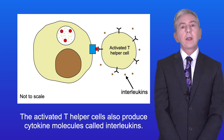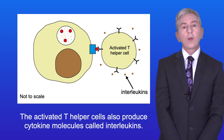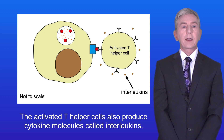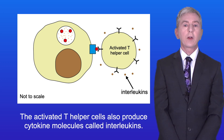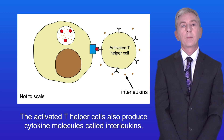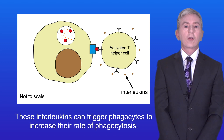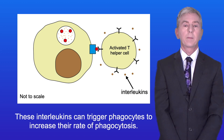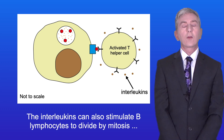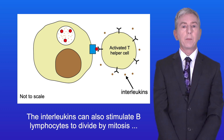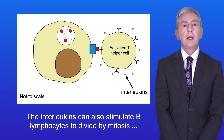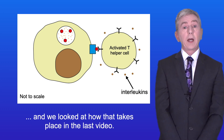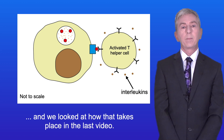The activated T helper cells also produce cytokine molecules called interleukins. These interleukins can trigger phagocytes to increase their rate of phagocytosis. The interleukins can also stimulate B lymphocytes to divide by mitosis, as we looked at in the last video.